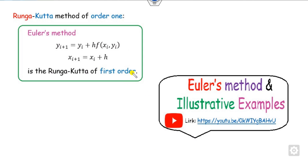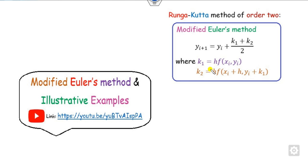In the last lectures we saw the Euler methods and illustrative examples. Basically, Euler's method is defined by y(i+1) and is called the Runge-Kutta first order, or order one. We also discussed the modified Euler method, which is nothing but the Runge-Kutta method of the second order, where the y values are defined accordingly.